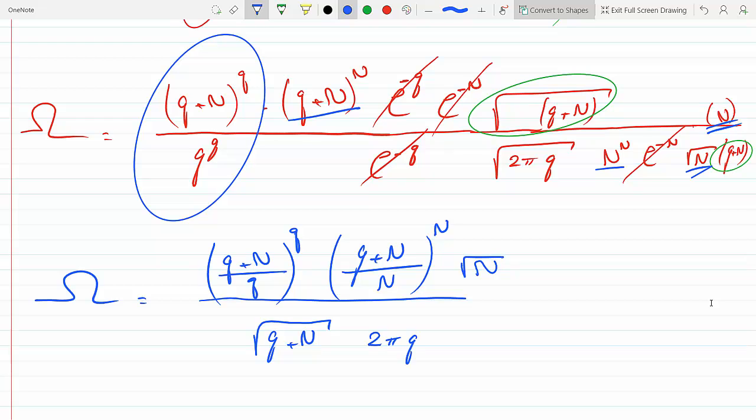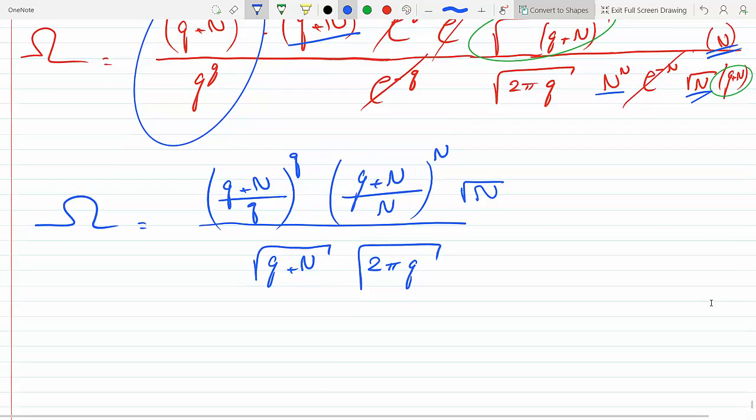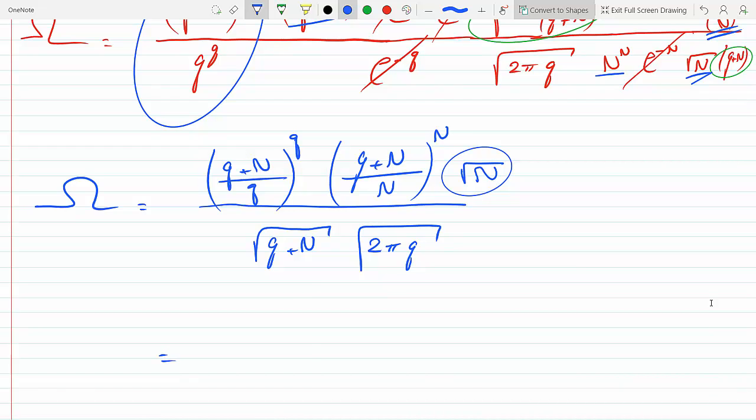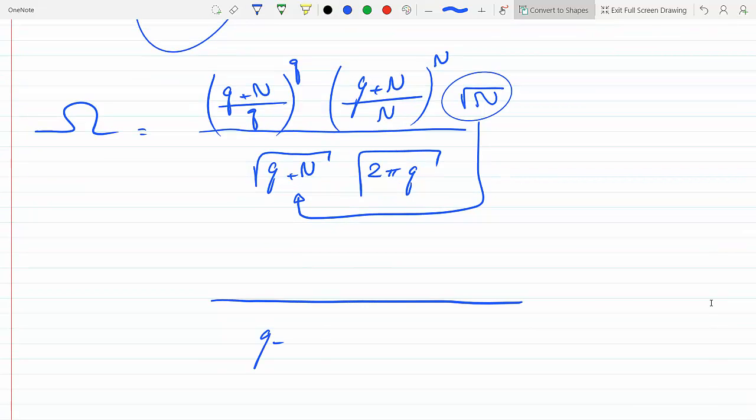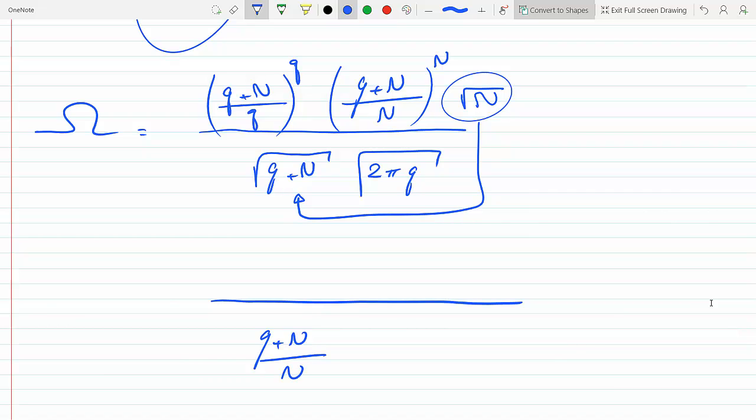And 2πq square root. Now let me bring this square root n to the denominator so I can arrive at the final expression. I could do that and put it under the same square root. Our final expression should look like (q+n) over n. And this is all square root. And then there's a 2πq which I could merge under the same square root. So this is multiplication, so all I have to do is extend the square root.